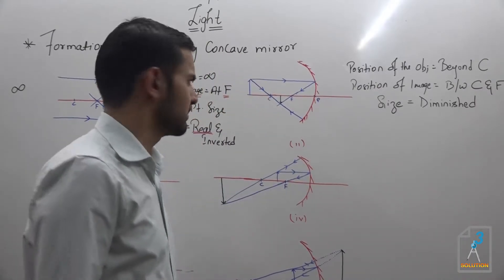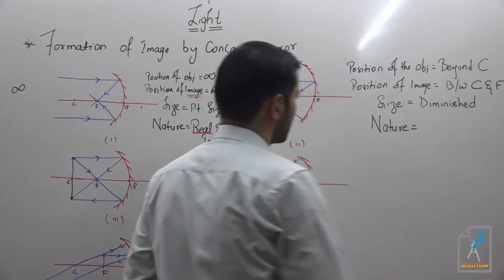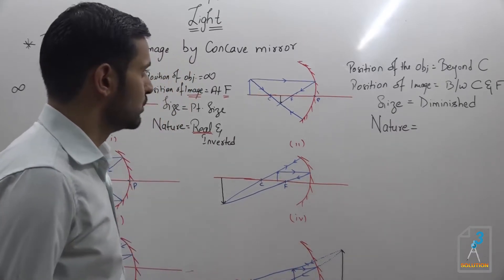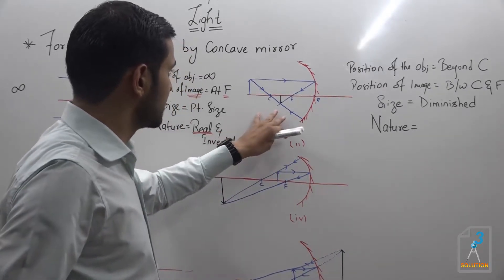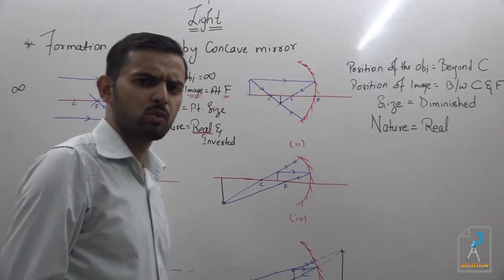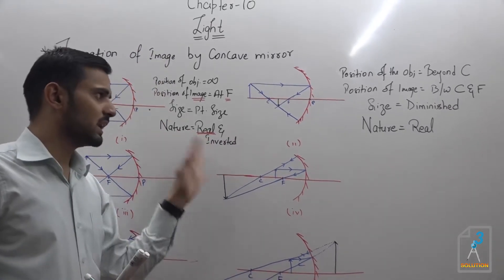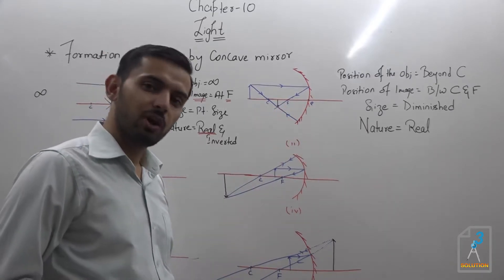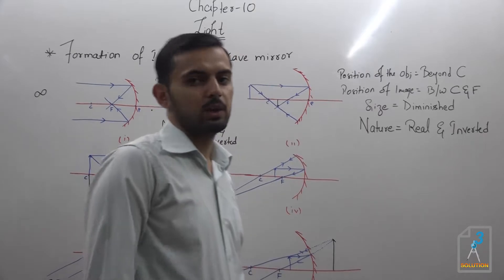The nature of the image: since the light rays are actually meeting, the image is real. And because it is a real image, it must be inverted. You can easily identify from the diagram that the image is already inverted — so it is real and inverted.